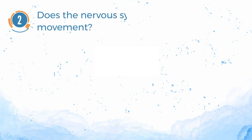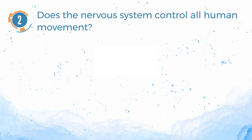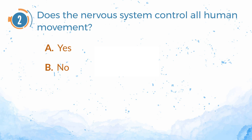Number 2. Does the nervous system control all human movement? A. Yes. B. No. The answer is A. Yes.